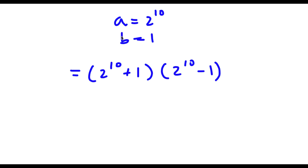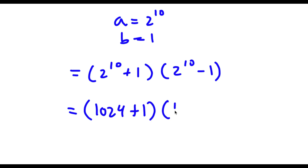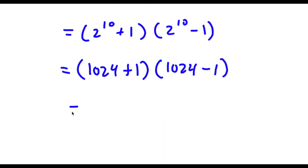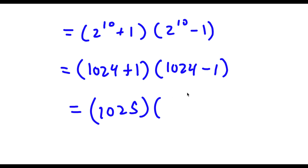Now 2 to the power of 10 is equal to 1024. So now I have 1024 plus 1 times 1024 minus 1. That's going to be 1025 times 1023.